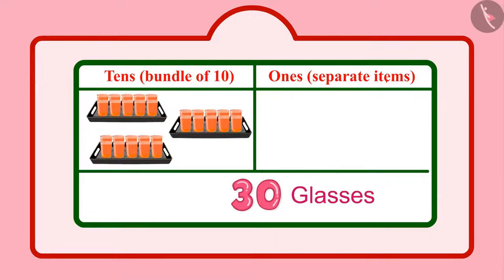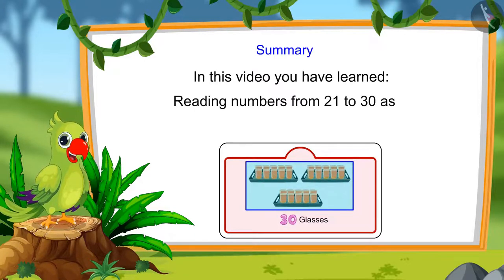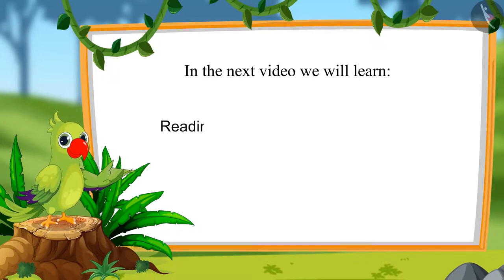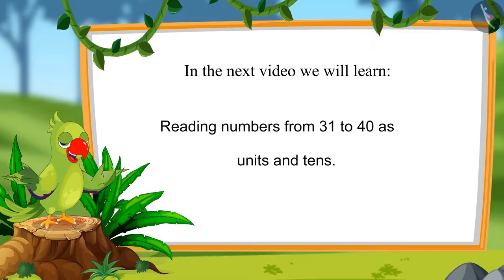So children, this means today 30 glasses of sherbet were made in Chotu's house. That was all for today. In this video, you learned numbers from 21 to 30 and how to read those numbers as units and tens. In the next video, we will learn to read numbers from 31 to 40 and how to read those numbers as units and tens. Until then, bye children!